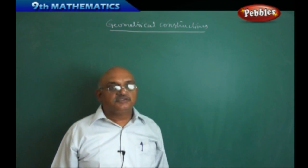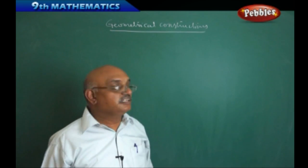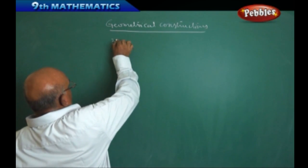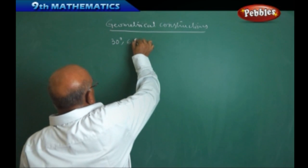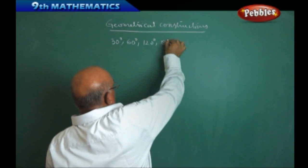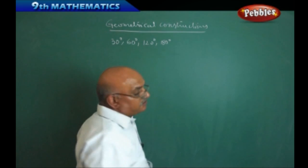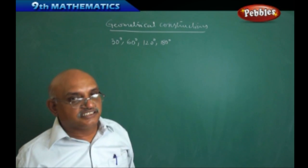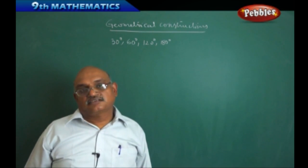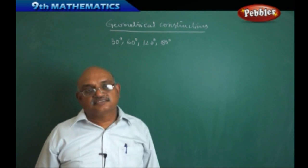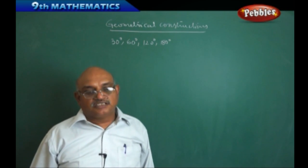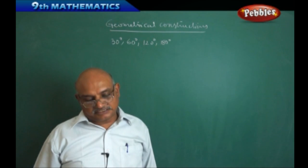In your lower classes you might have studied the angles like 30 degrees, 60 degrees, 120 degrees, and 180 degrees construction. The same concept we are going to study here — how to construct triangles and angular bisectors. First, we will start with how to construct an angular bisector.